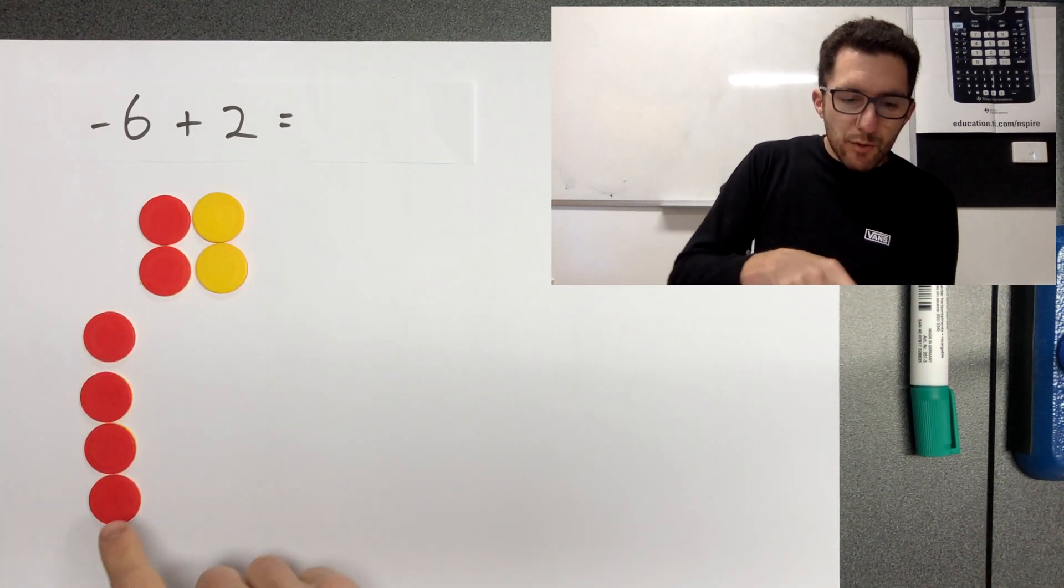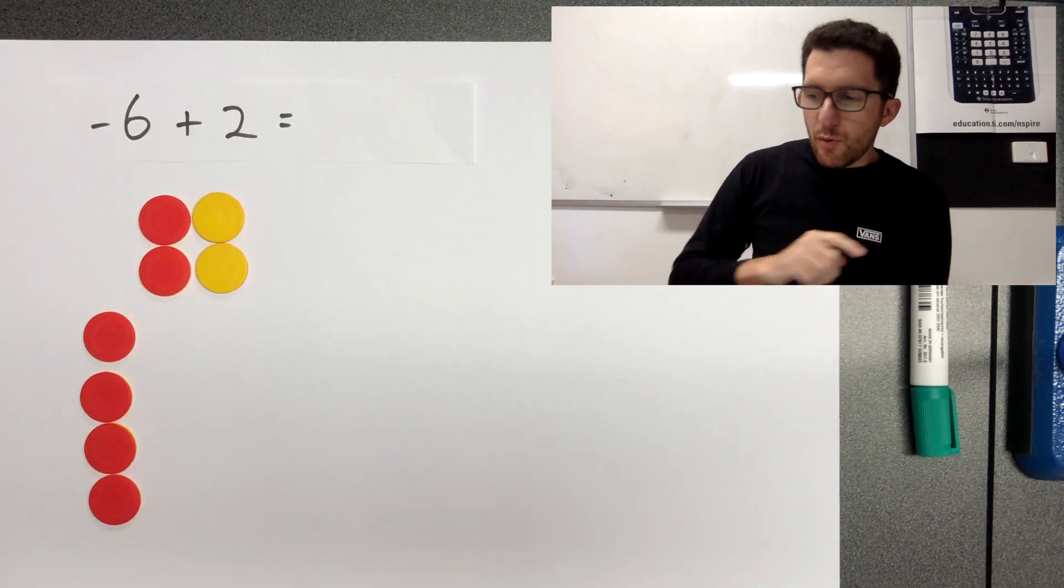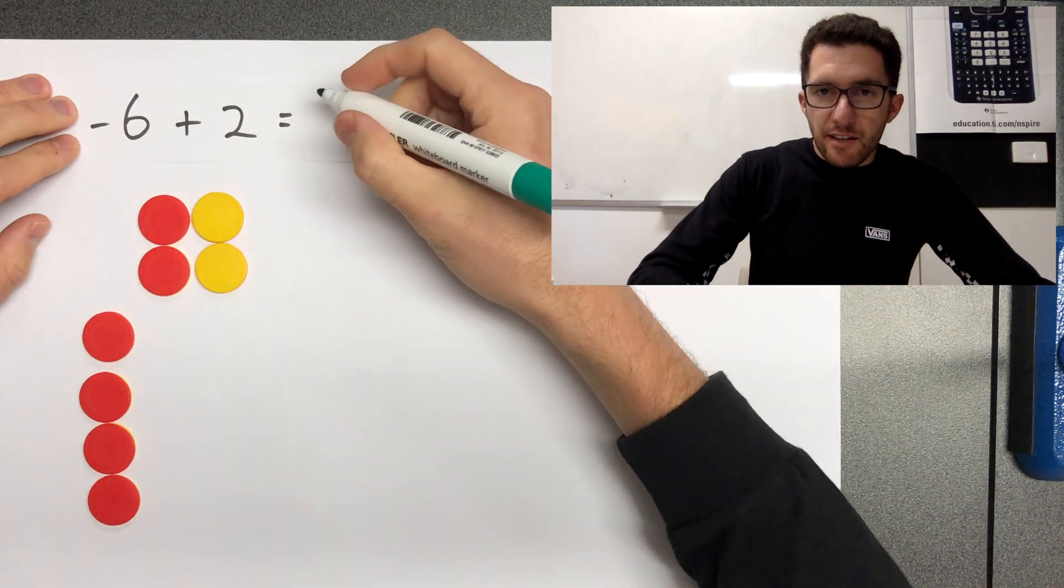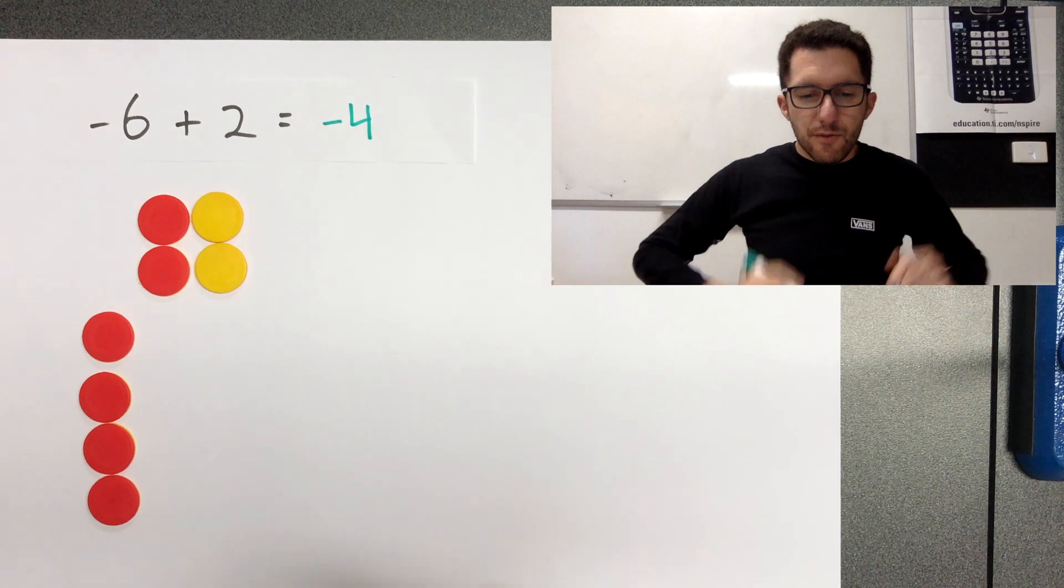And so we can see here that we're able to make two zero pairs. How many are we left with? Because all of this is zero. One, two, three, four. But these are negatives, aren't they? So we're left with negative four.